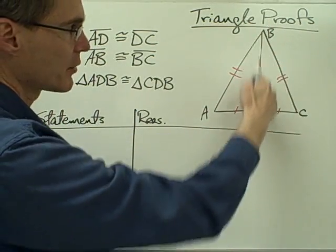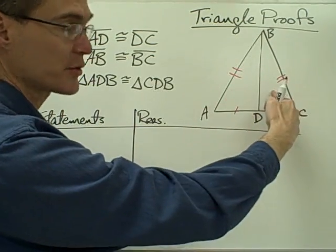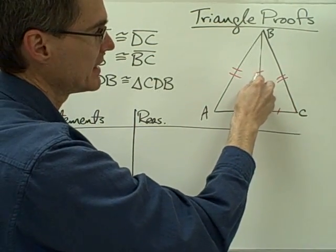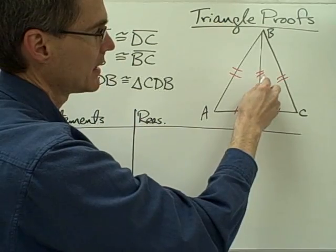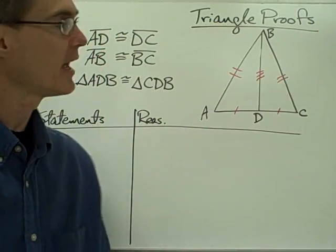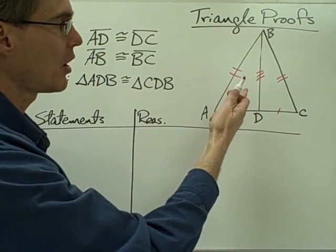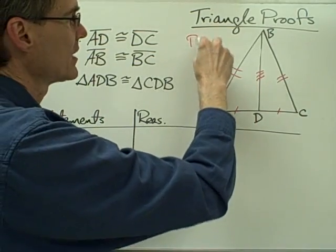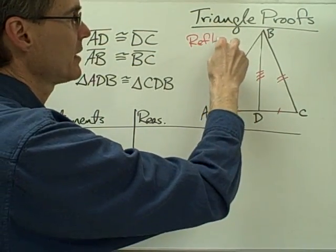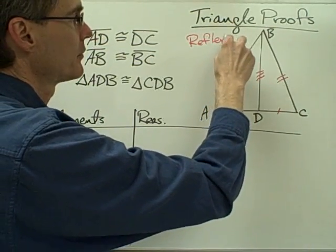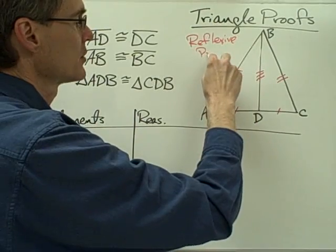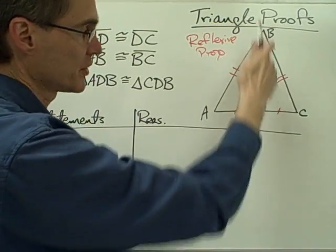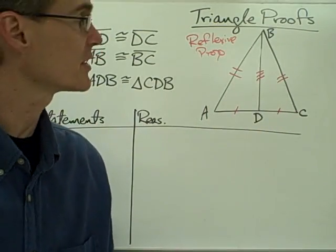Segment BD — notice that it's a side of this triangle and it's also a side of this triangle. I'm going to say that segment BD is congruent to itself, and you may recall that anything congruent to itself uses the reflexive property of congruence. So I'm going to be using the reflexive property of congruence to say that segment BD is congruent to itself.